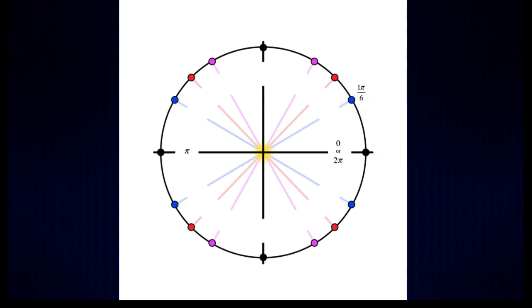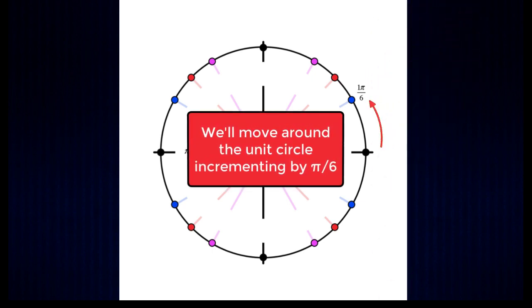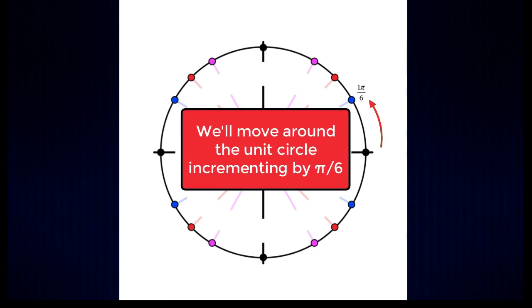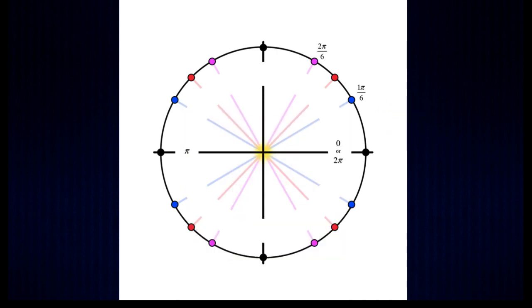And remember that one pi over six is equivalent to 30 degrees. So we're going to move around the unit circle with increments of pi over six. Following that pattern,